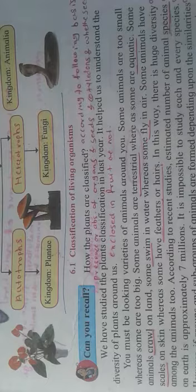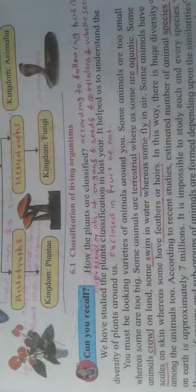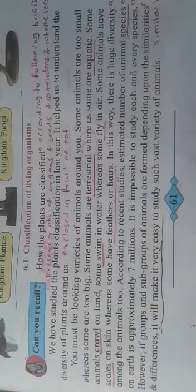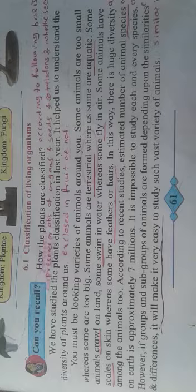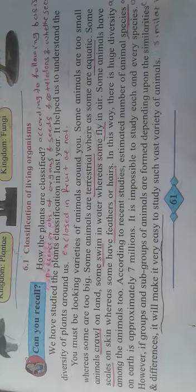There is a great diversity — meaning a great variety — of living organisms found around us. Some animals are too small and some are too big. Some are terrestrial, meaning they live on land; some fly in air; some crawl on land; some swim in water. According to recent studies, the estimated number of animal species on Earth is approximately seven million, and it is impossible to study each and every species. Therefore there is a need for animal classification — with the help of groups and subgroups we can easily study this vast variety.